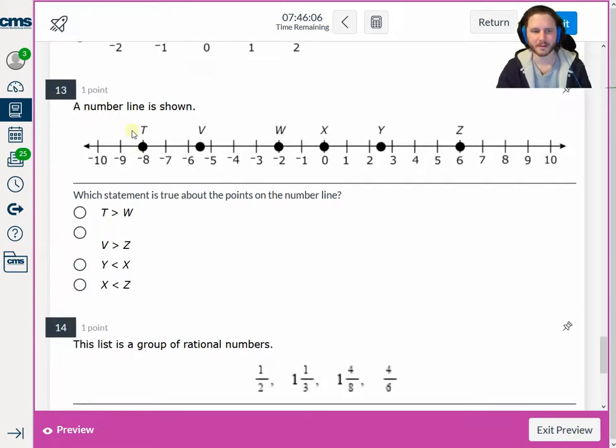For number 13, which statement is true about these points? T is more than W. No. T is to the left. It's not more than anything. V is more than Z. Again, no. V is to the left. It's less. Y is less than X. Y is less than X. No. Y is to the right, so Y is more than X. V is less... Or sorry, X is less than Z. Yep. X is to the left, therefore it is less than Z.